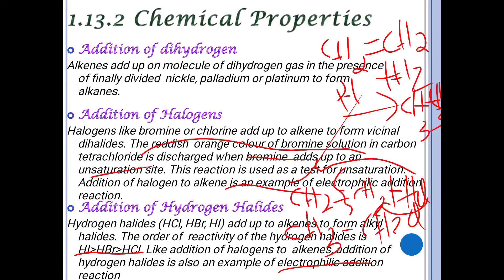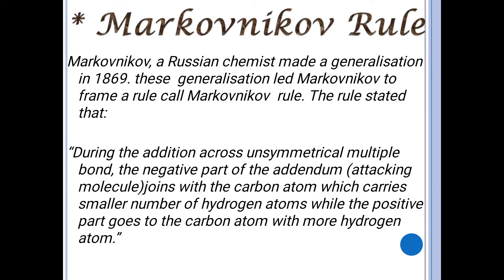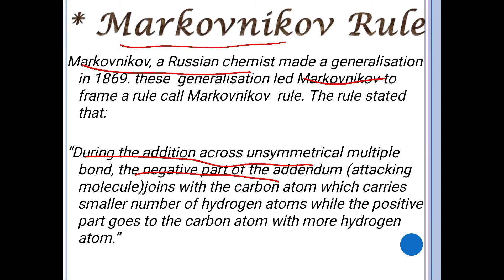A very important rule in addition reactions is Markovnikov's rule. Markovnikov was a Russian chemist who made a generalization in 1869 that led to this rule. It states that during addition across an unsymmetrical multiple bond, the negative part of the addendum goes to the carbon atom carrying the smaller number of hydrogen atoms, while the positive part goes to the carbon with more hydrogen atoms.